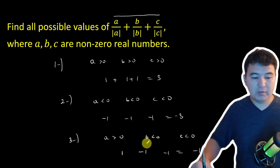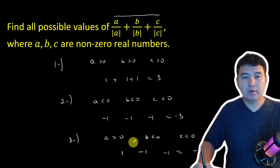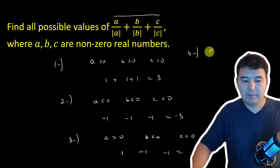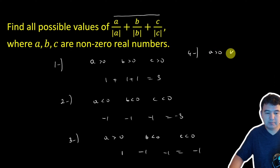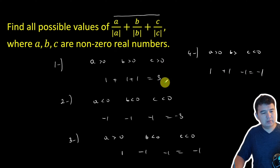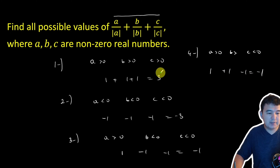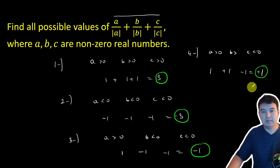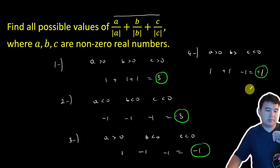Or if only one of them is negative and two of them are positive — that's the fourth case — where we have A positive, B positive, C negative, so that results in 1 plus 1 minus 1. So with the definition of absolute values, this expression can have four different values: it could be positive 3, negative 3, positive 1, or negative 1.